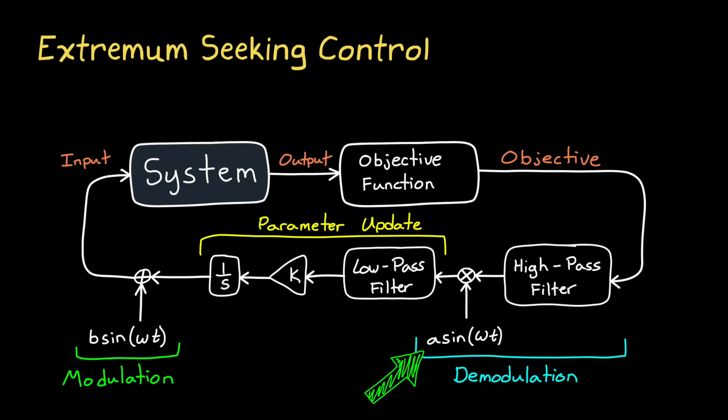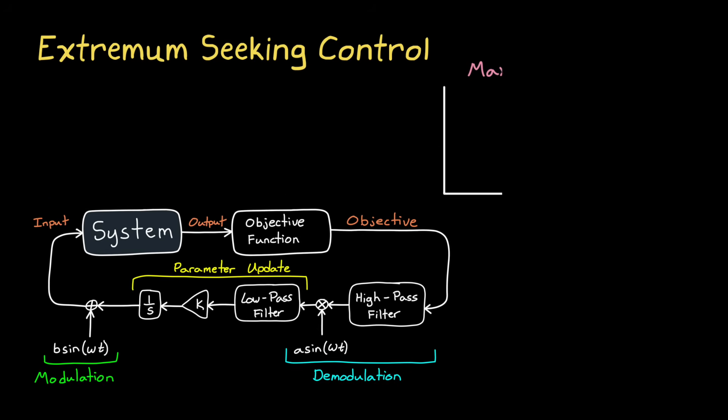We place a perturbation on the system inputs, and then we observe how those perturbations change the output, and therefore how it changes the value of the objective function. If the perturbation increases the value, then Extremum Seeking Control changes the input into the system slightly in that direction.